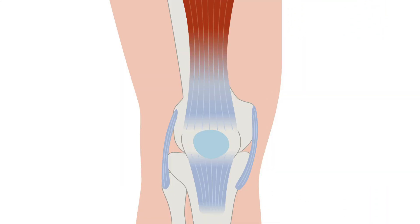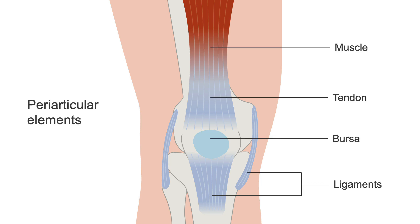Additionally, joints are surrounded by other soft tissue structures, also known as periarticular elements, that help preserve the function of the joint. These include ligaments, tendons, bursa, and muscles.